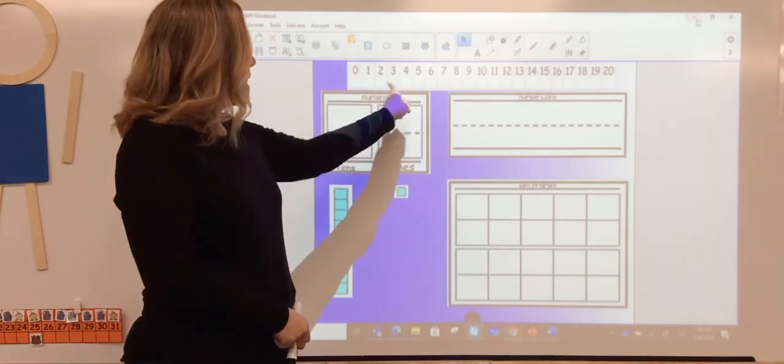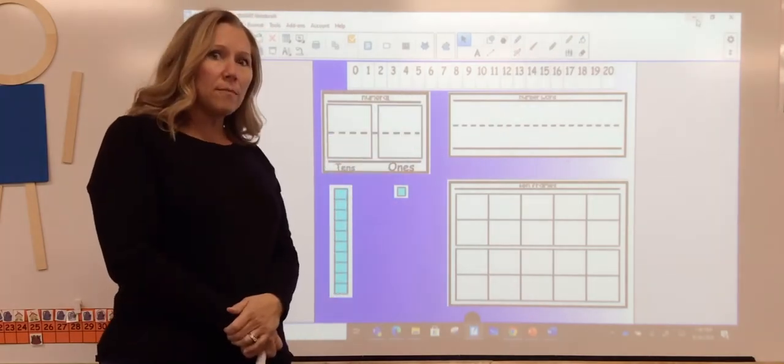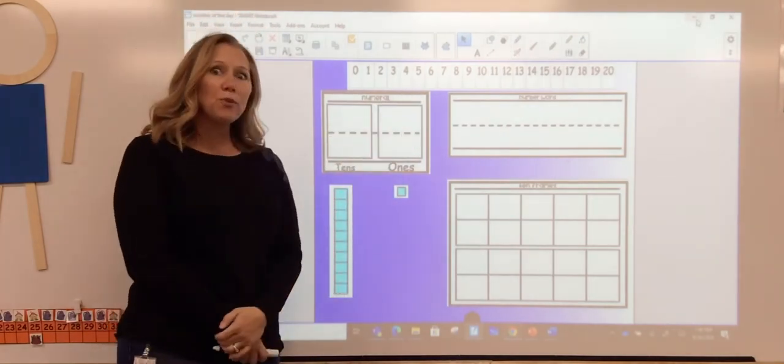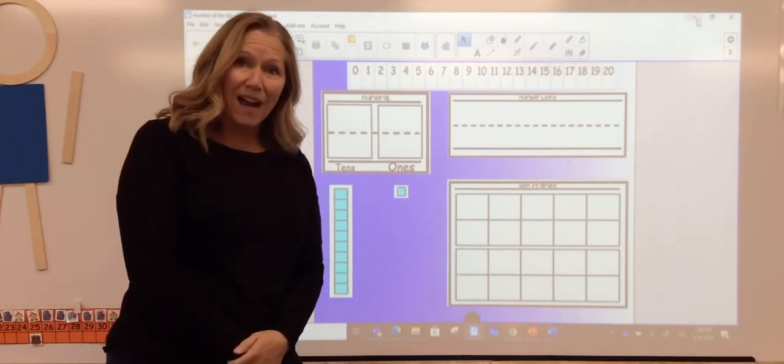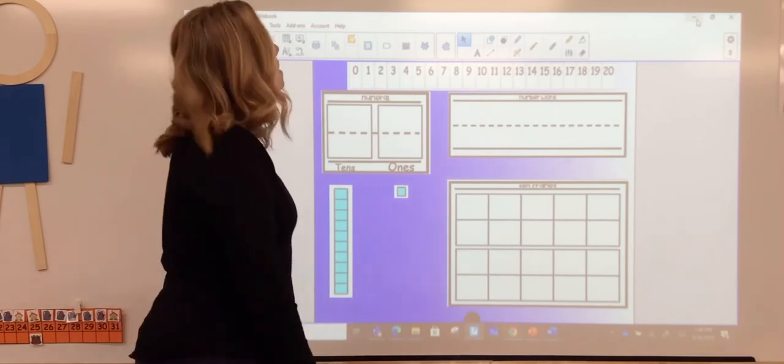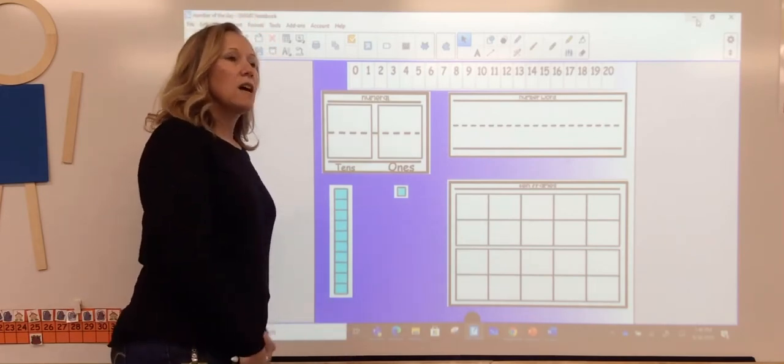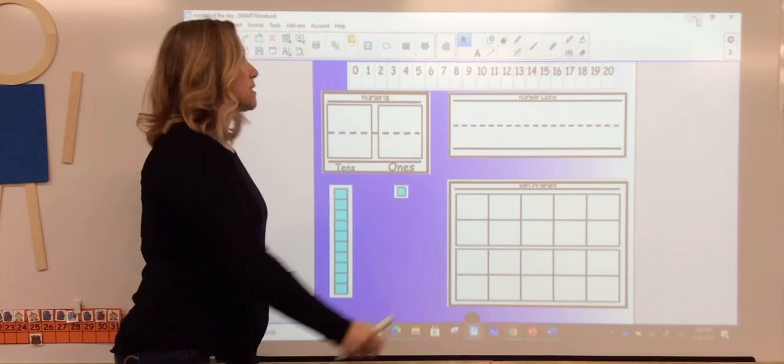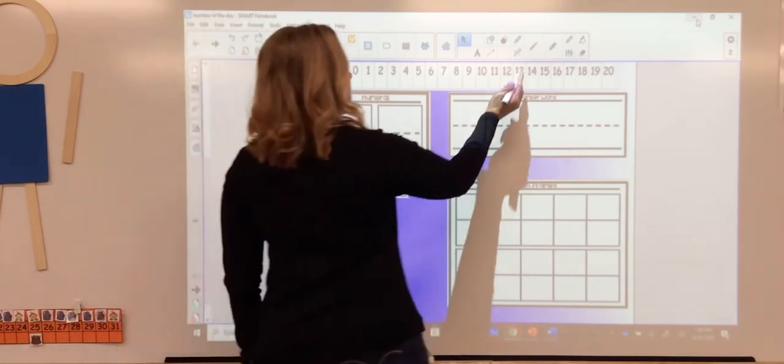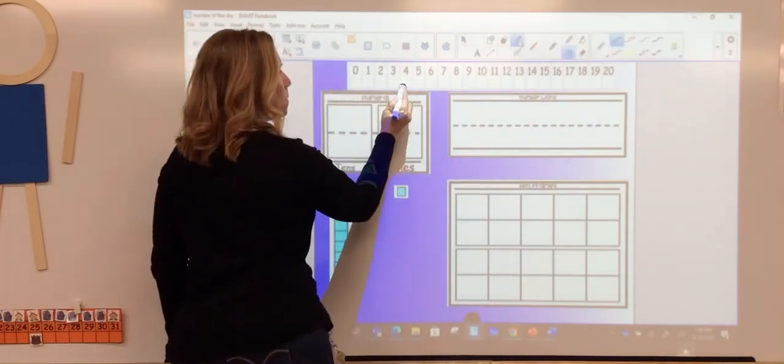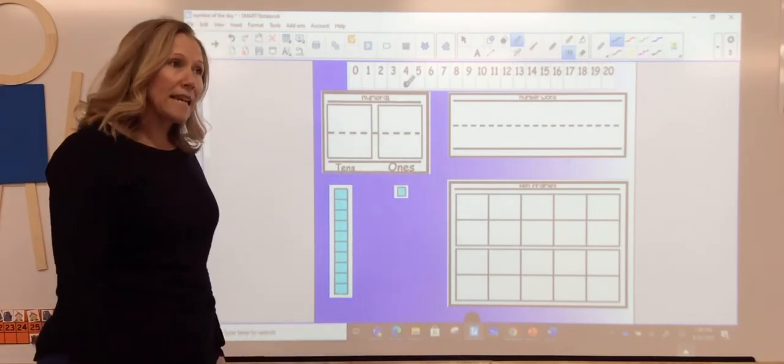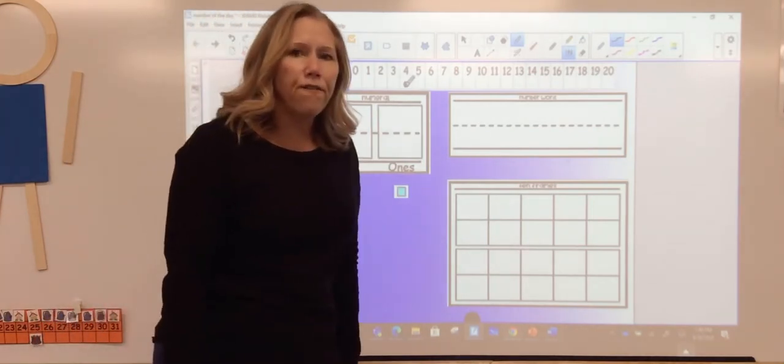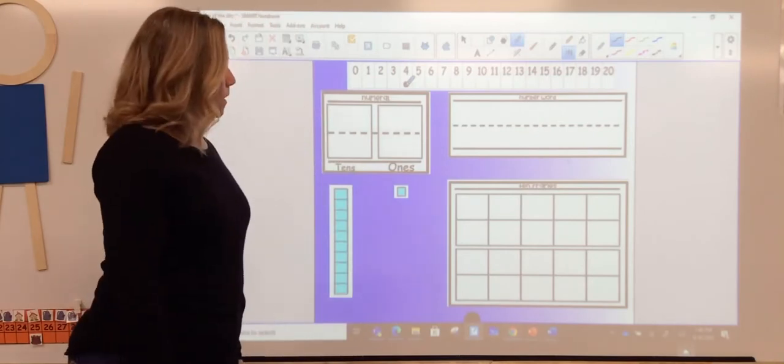So looking at our number path, what number comes after three? That's right friends, the number four. So let's put a mark on our number paths and make that a four. Mark it on the four. There's the number four right there. Can you say that with me? Four.